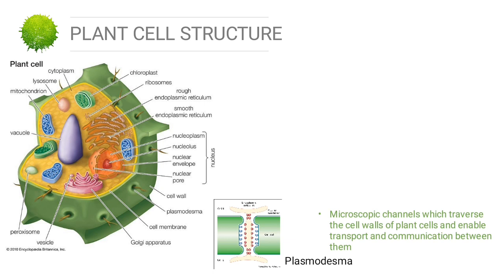Plasmodesmata are microscopic channels which traverse the cell walls of plant cells and enable transport and communication between them.